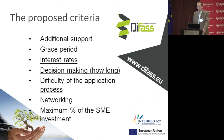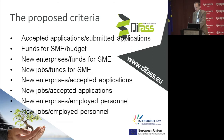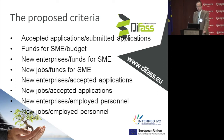In my opinion, the three underlined criteria should be decreased. The second group includes: accepted applications, submitted applications, funds for SME budget, new enterprises, funds for SME new jobs, and funds for SME. You have received these criteria, so I will go further.